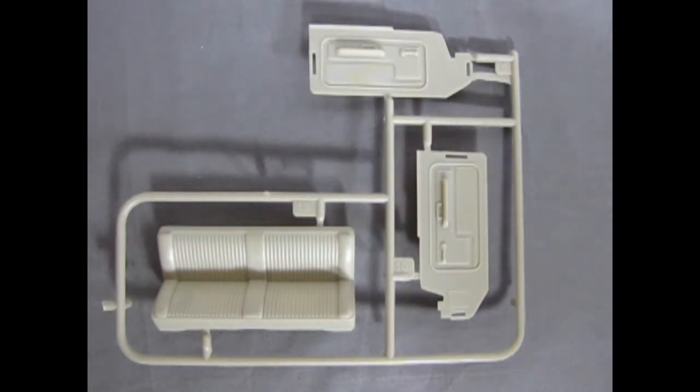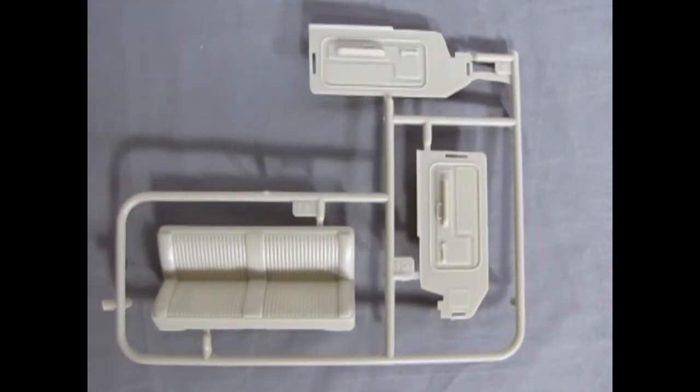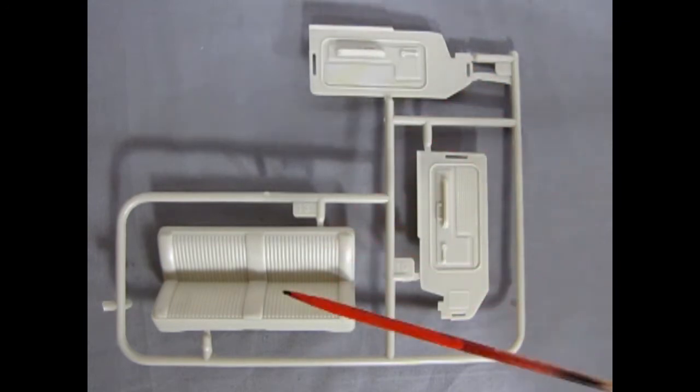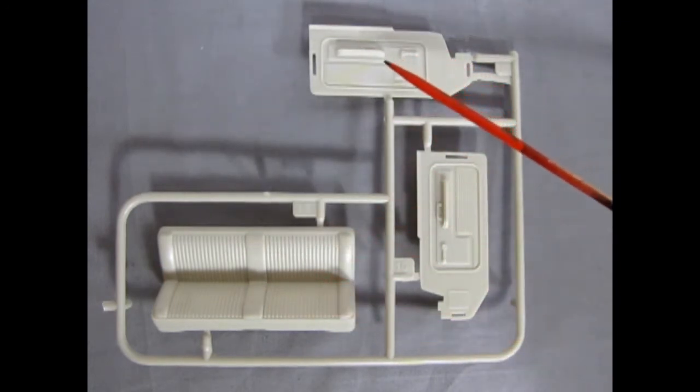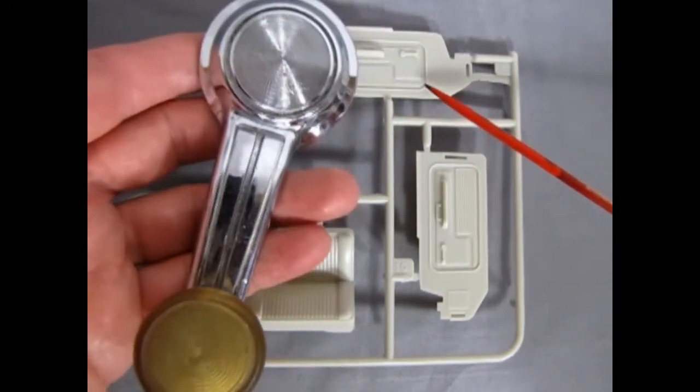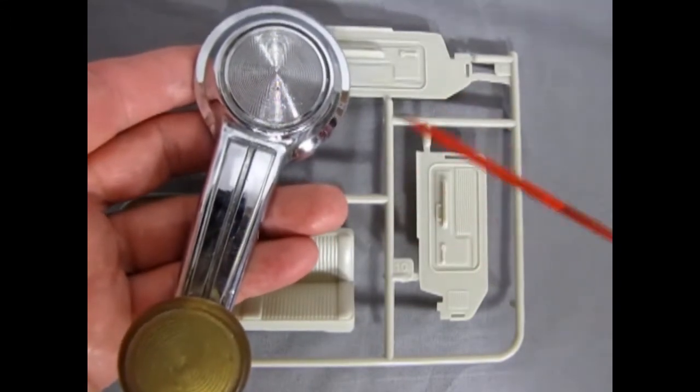Next we have our interior door panels with beautifully molded armrest and door hinges. Next we have our beautifully detailed interior panels with our seat here and our nicely detailed door panels. As you can see they have beautiful armrest detail here and window cranks that actually look like the real window cranks of the truck.